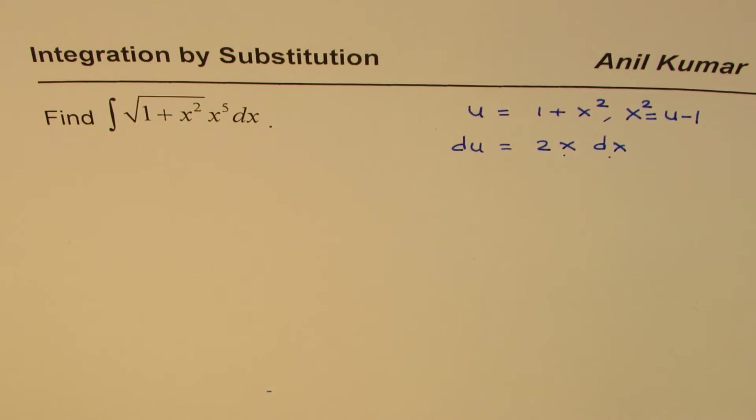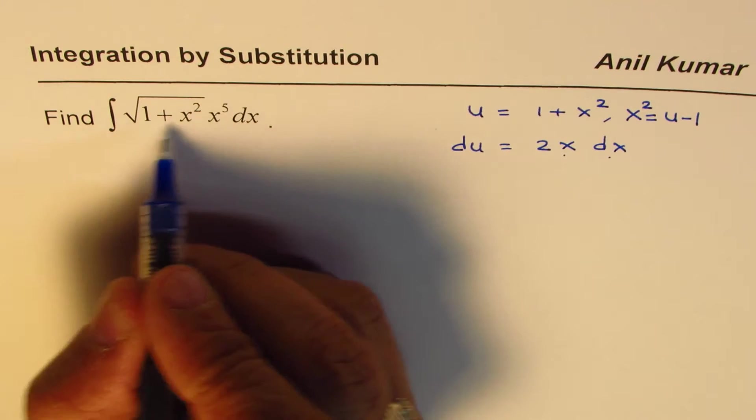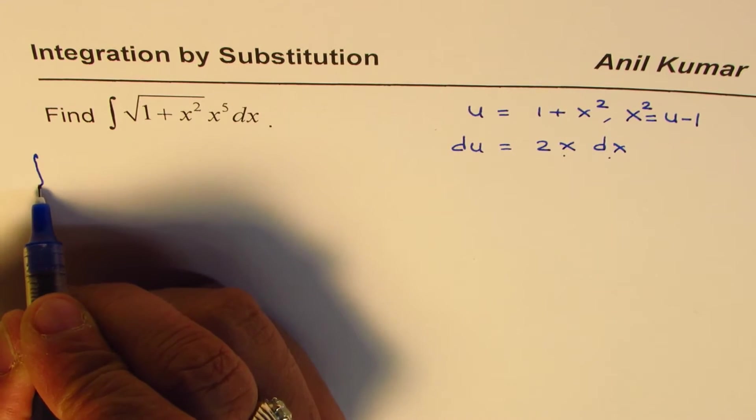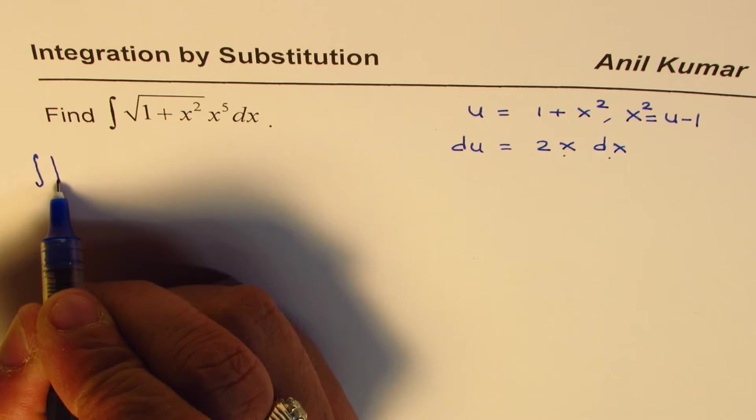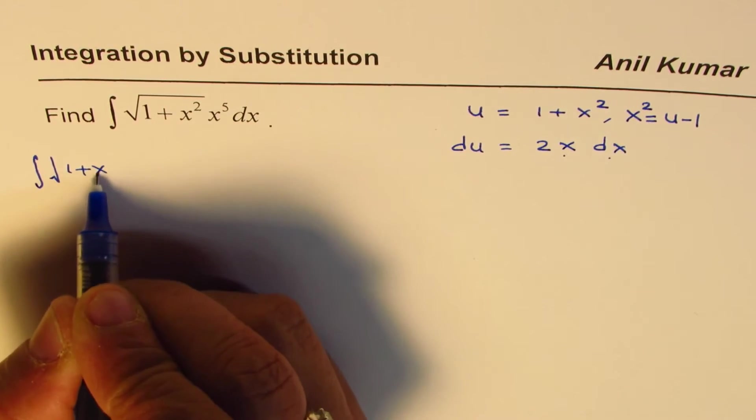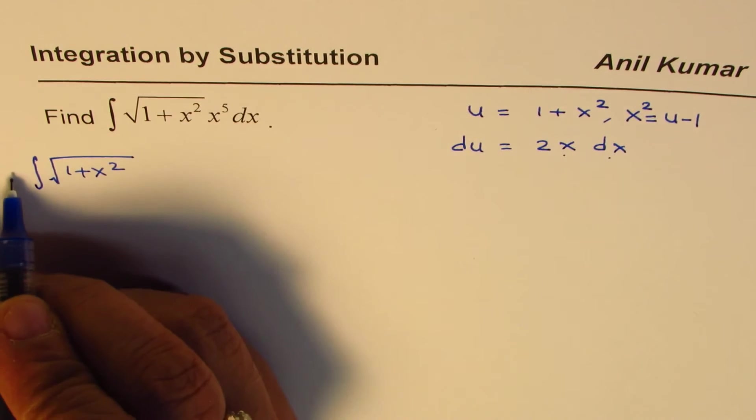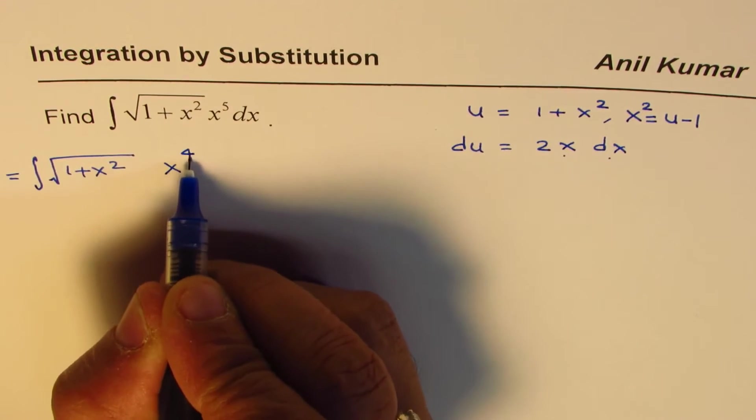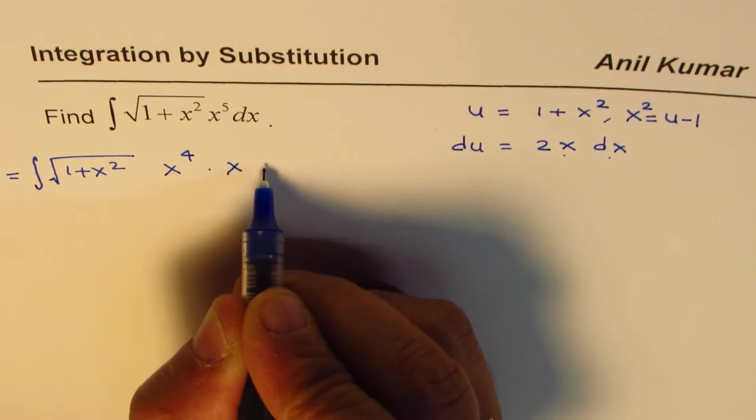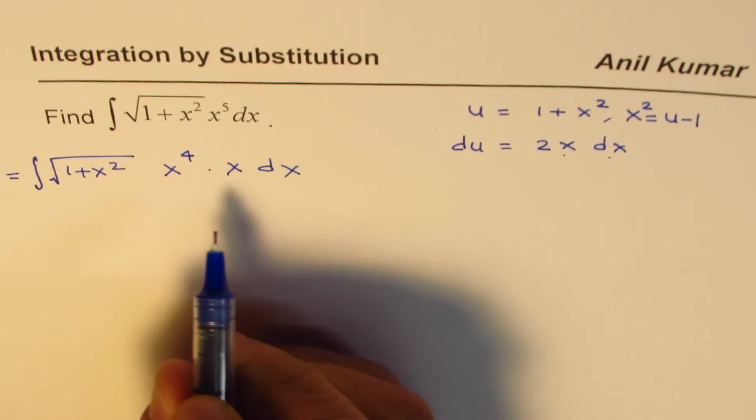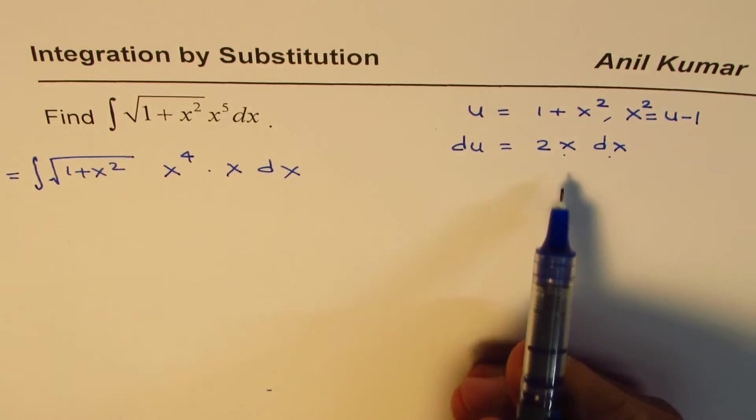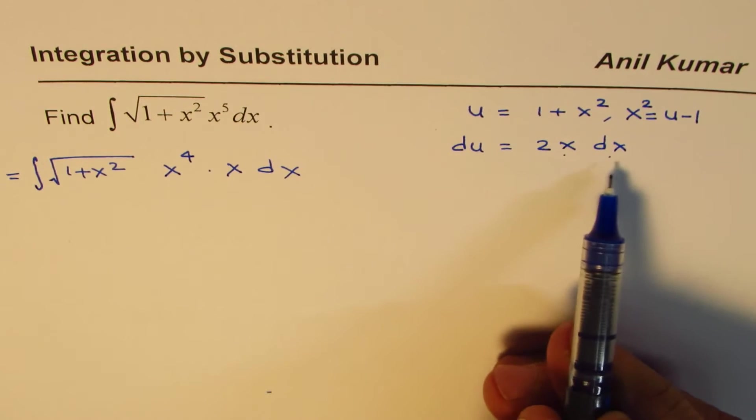So du, 2x dx is the derivative, so x dx will be taken care of by that part. We've got all the pieces together. Now we'll rewrite this integral function. What we have here is integral of 1 plus x squared, and instead of x to the power of 5, let me write this as x to the power of 4 times x dx.